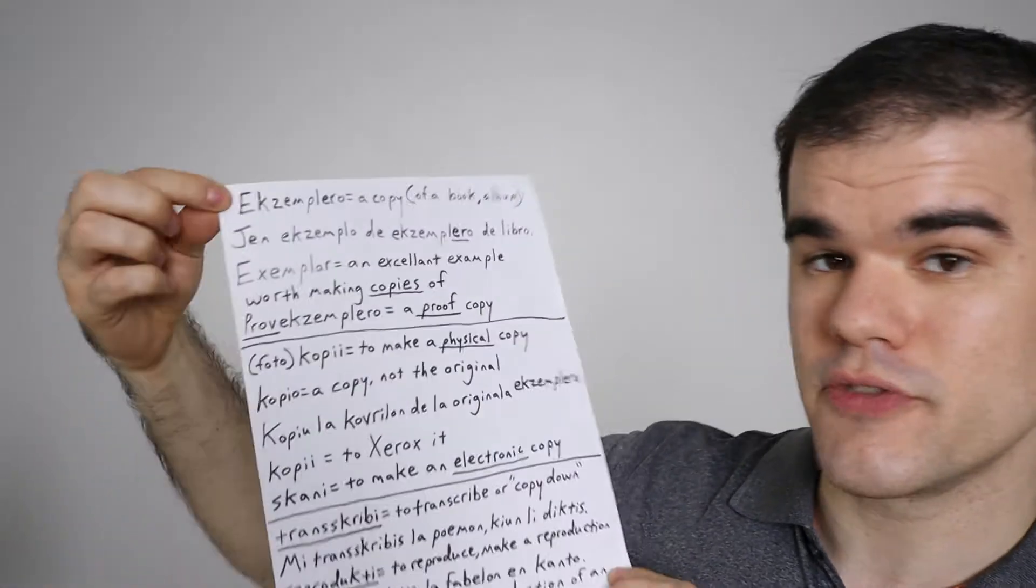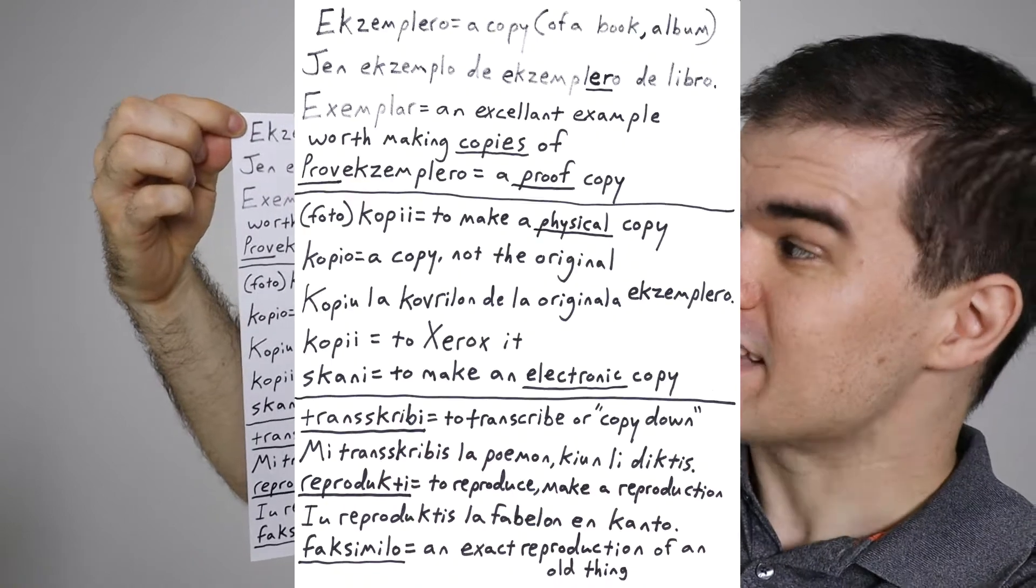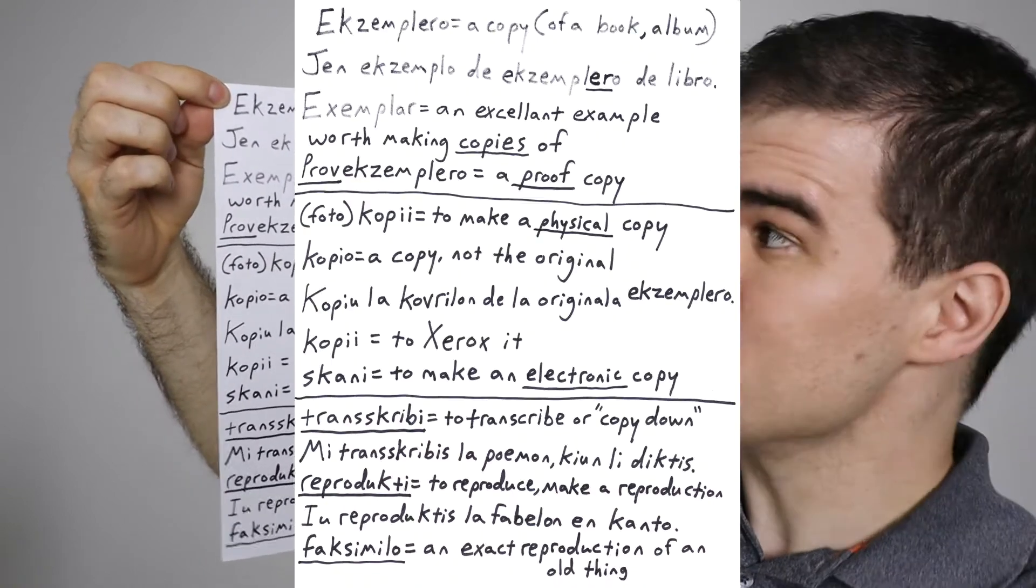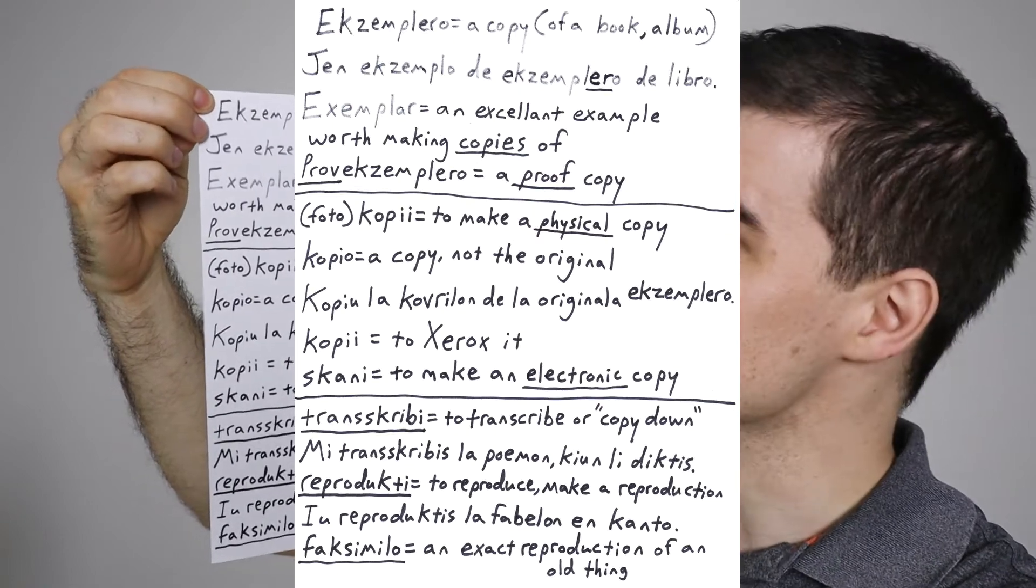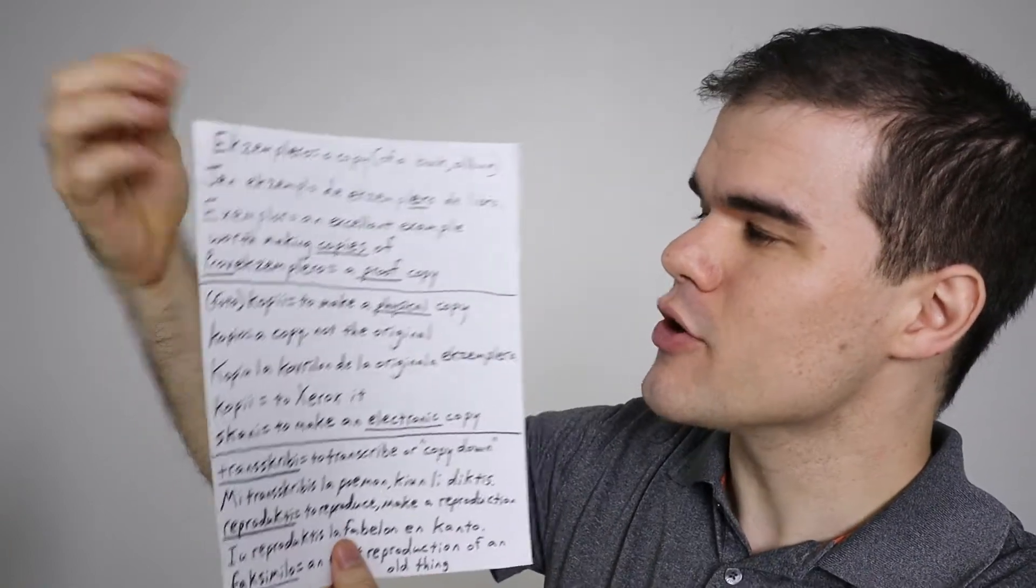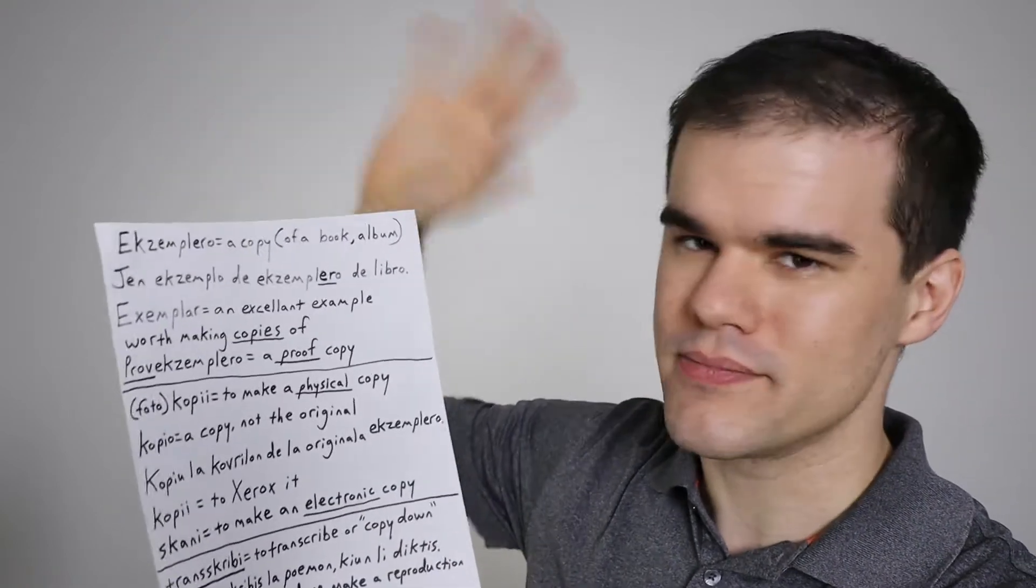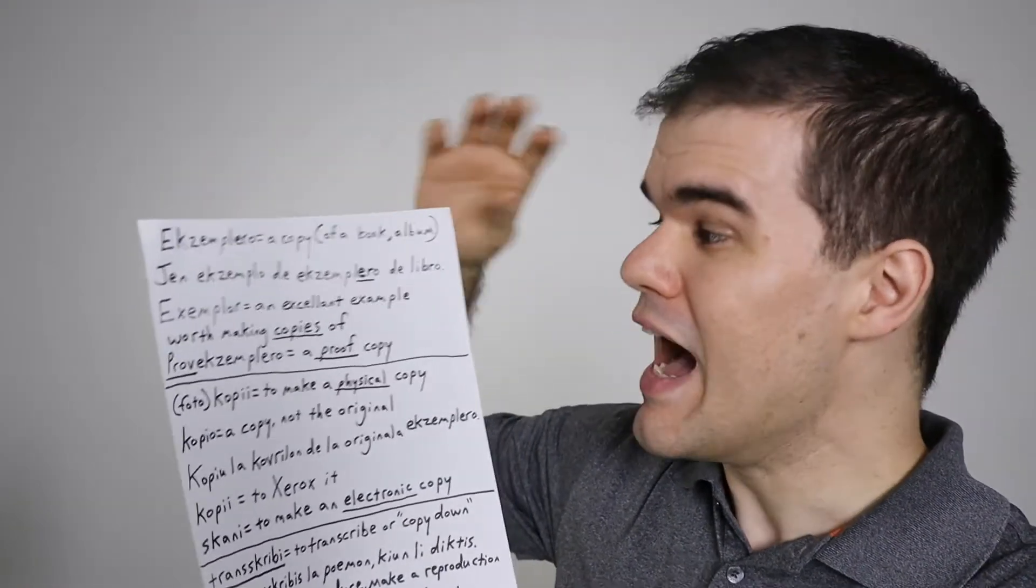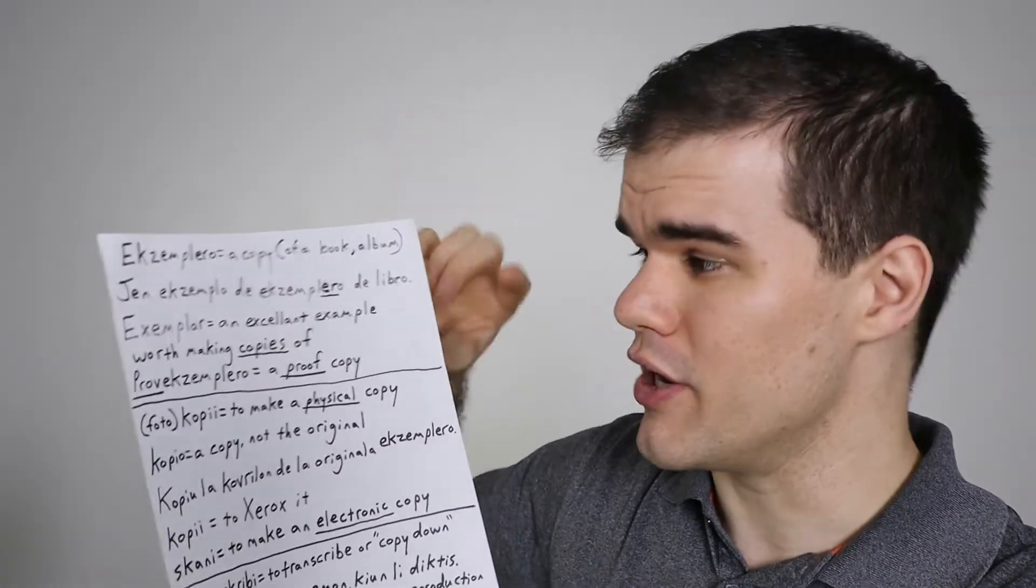Alright, we're already a few words into our first page of vocab. Exemplero, a copy of a book or a magazine or an album. Exemplo de exemplero. I say exemplo because I want you to note that those are similar words but they're different words. Exemplero is not like an arrow of exemplo. It's not a particle of an example. It's a totally separate root. I don't know of a word in English that's similar to exemplero, so you just have to learn it.